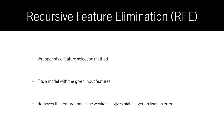We utilize Recursive Feature Elimination as a feature selection method. RFE is a wrapper-style feature selection method that fits the model with the given input features and removes the feature that is the weakest. RFE seeks to improve generalization performance by removing the features whose removal has the least effect on training errors. It does so till the specified number of features are reached, or till the model fits with greater training accuracy, stopping when the model does not achieve a benefit with the training data.